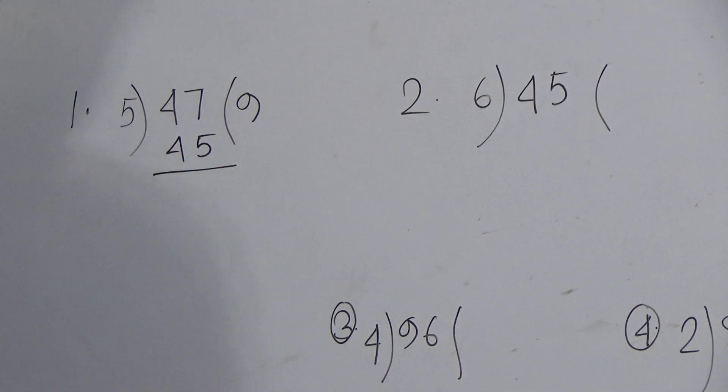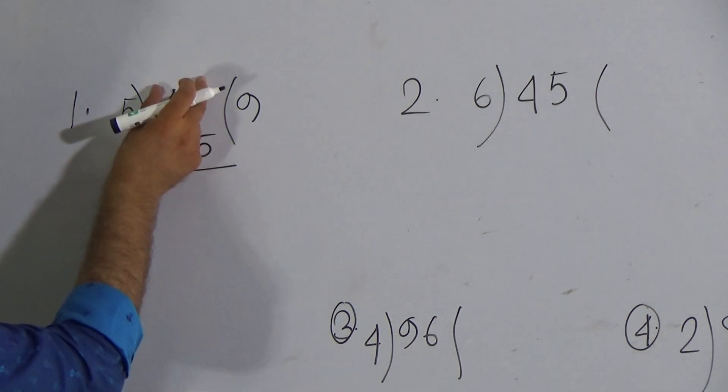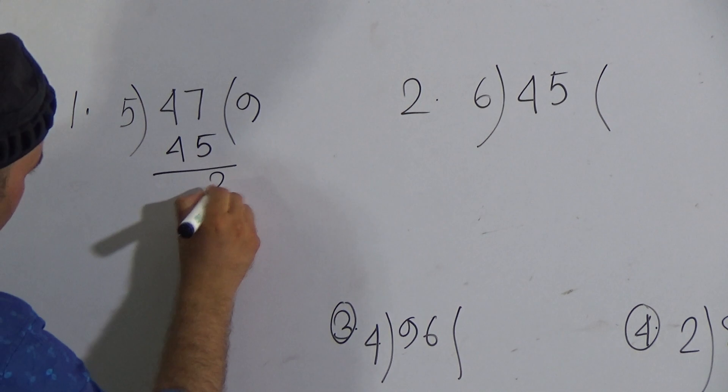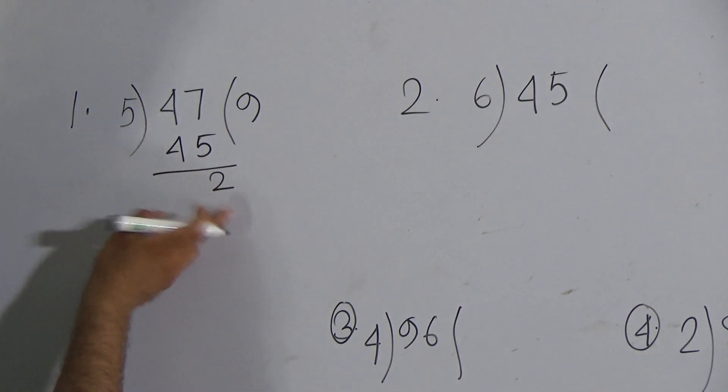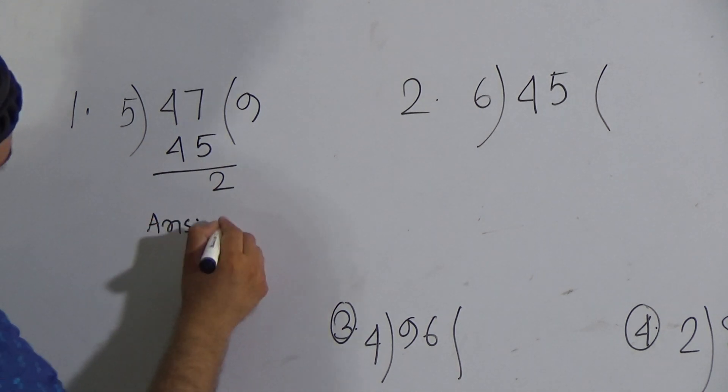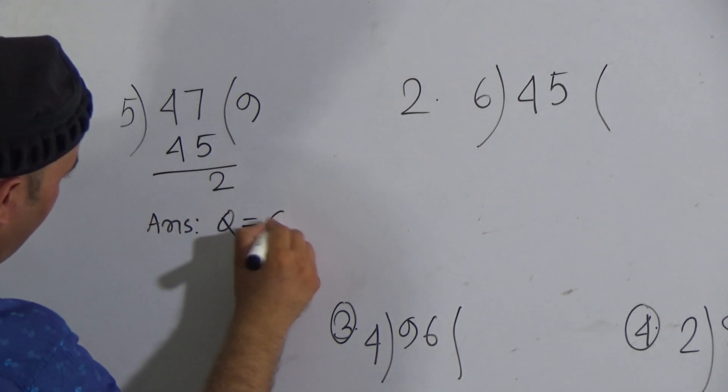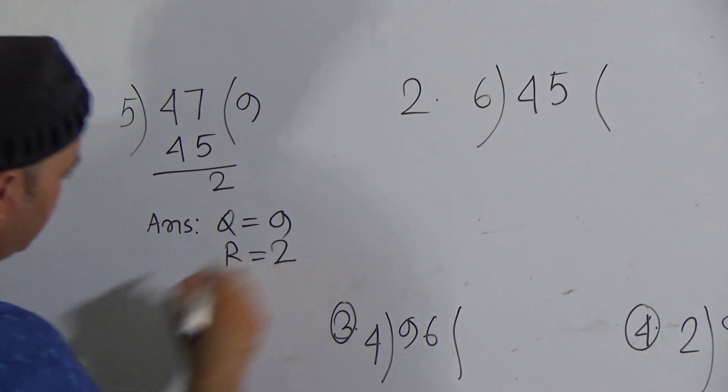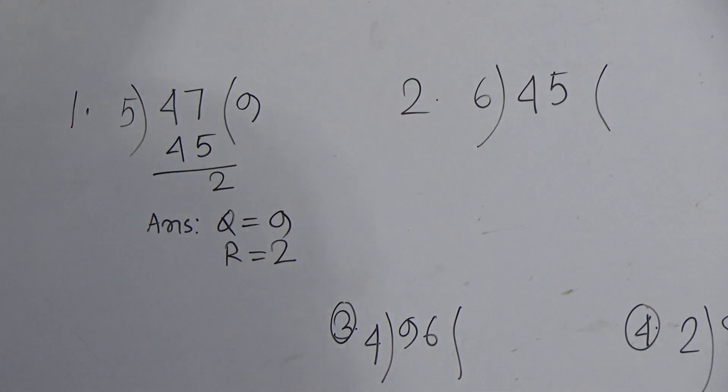Now draw a line here and subtract 45 from 47. 5 from 7 it will be 2 and there is no carry. So the answer is quotient 9 and remainder 2. My dear students, so we understood this one.